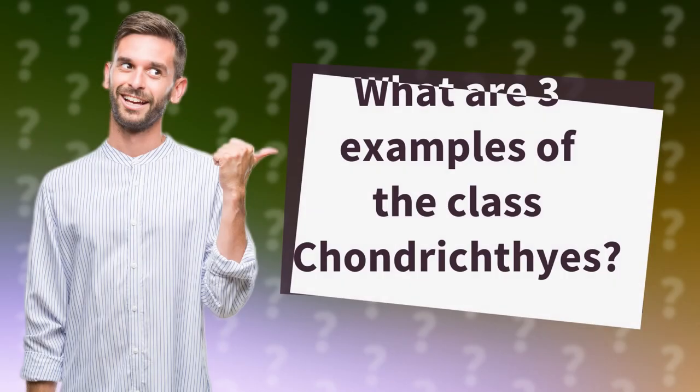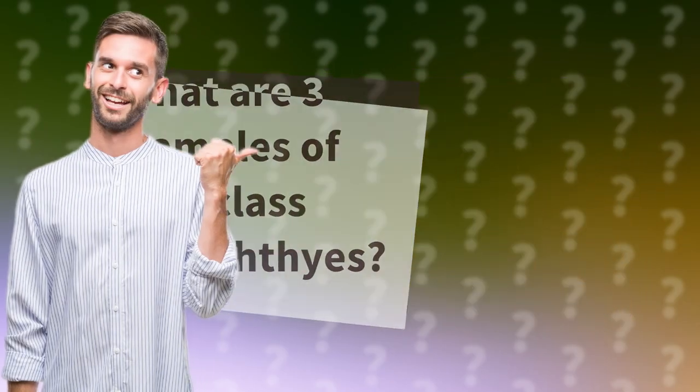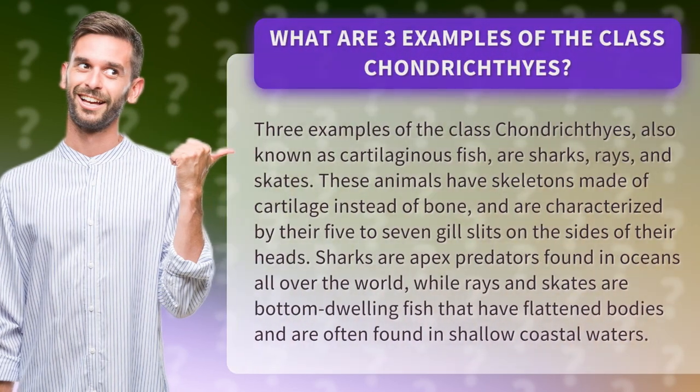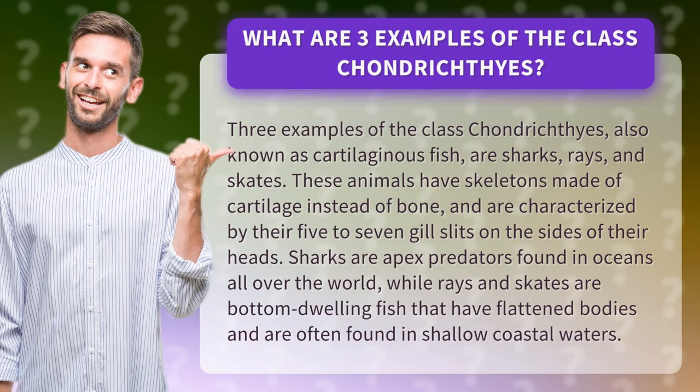What are three examples of the class Chondrichthys? Three examples of the class Chondrichthys, also known as cartilaginous fish, are sharks, rays, and skates.